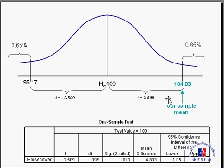Our sample mean of 104.83 is 2.509 standard errors to the right. 0.65% of the sampling distribution are in the right-hand tail. If you mirror this by going 2.509 standard errors to the left, you get to the value 95.17. And 0.65% of the sampling distribution are in the left-hand tail. The two areas in the tail add up to 1.3% or 0.013 as shown in the SPSS output.